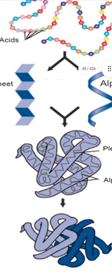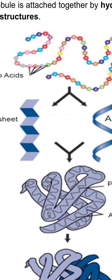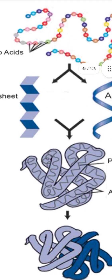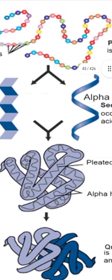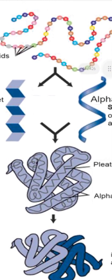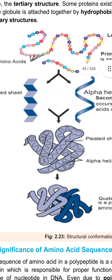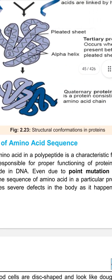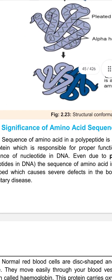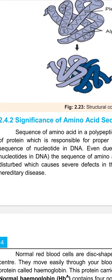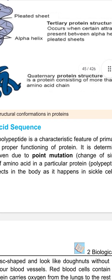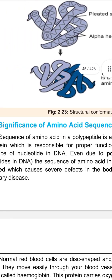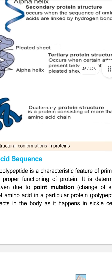To summarize the structural levels: alpha helix is secondary structure; beta-pleated sheet is also secondary structure; folding through ionic bonds and disulfide bridges gives the globular tertiary structure; and when all these globular structures join through hydrophobic interactions, that is the quaternary structure. The sequence of amino acids in a polypeptide is a characteristic feature of the primary structure of a protein, which is responsible for its proper functioning.